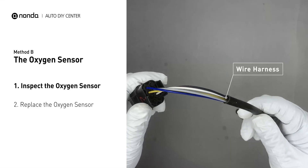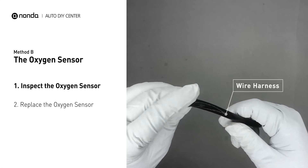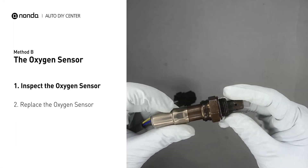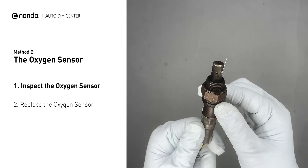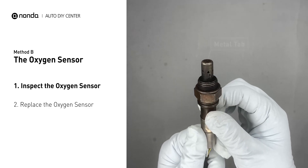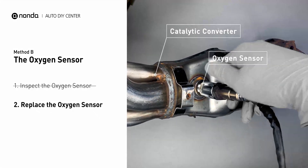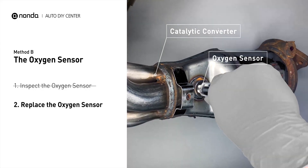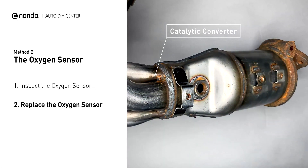Check the wire harness and metal tabs for any damages. If damages are found, then replace the oxygen sensor.